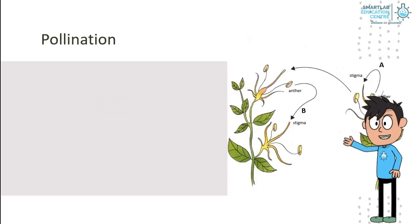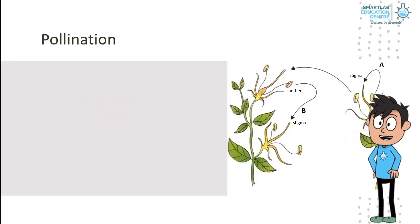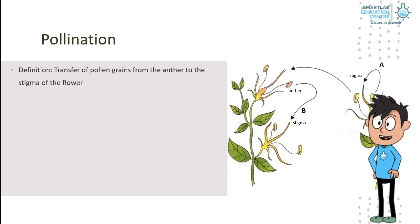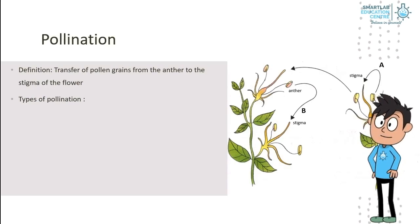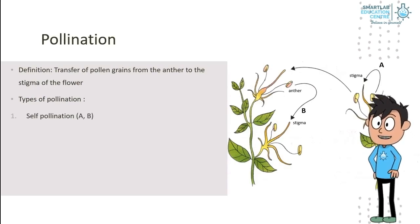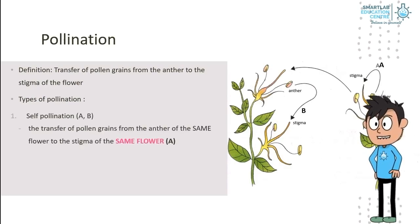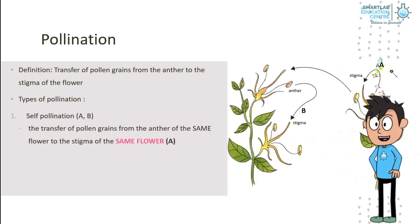The first stage: pollination. Pollination is the transfer of pollen grains from the anther to the stigma of the flower. There are two types of pollination. Self-pollination is the transfer of pollen grains from the anther of the same flower to the stigma of the same flower.